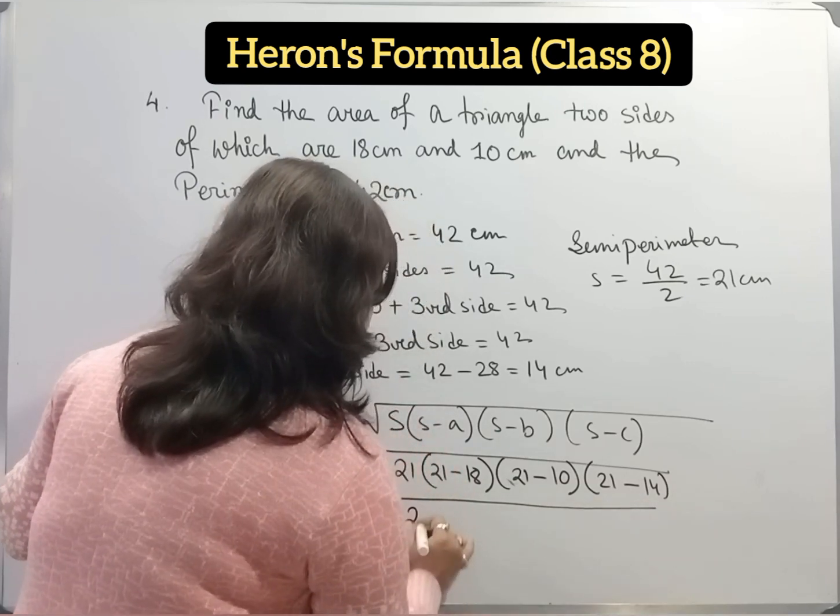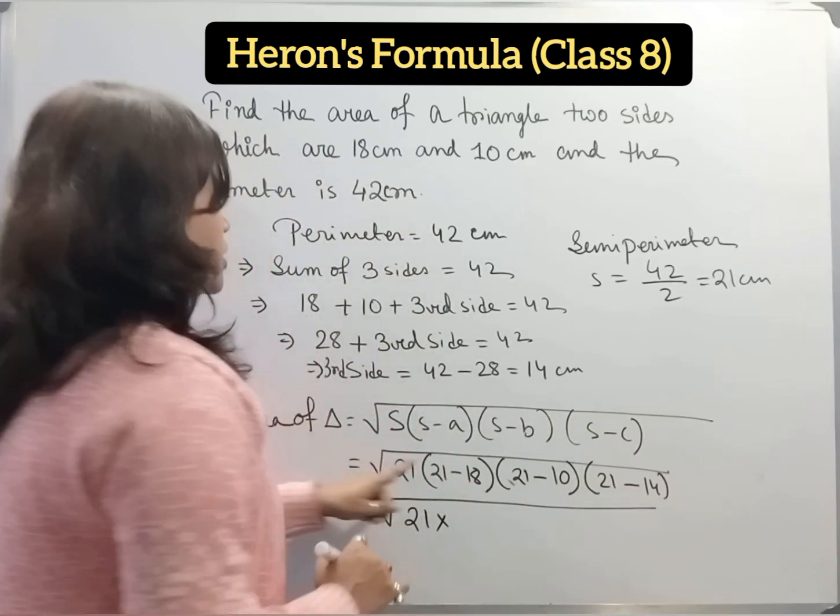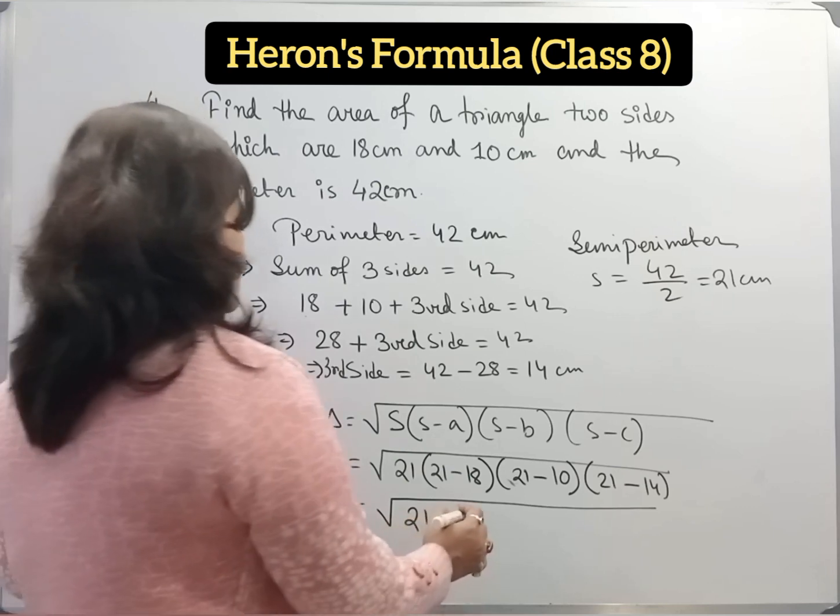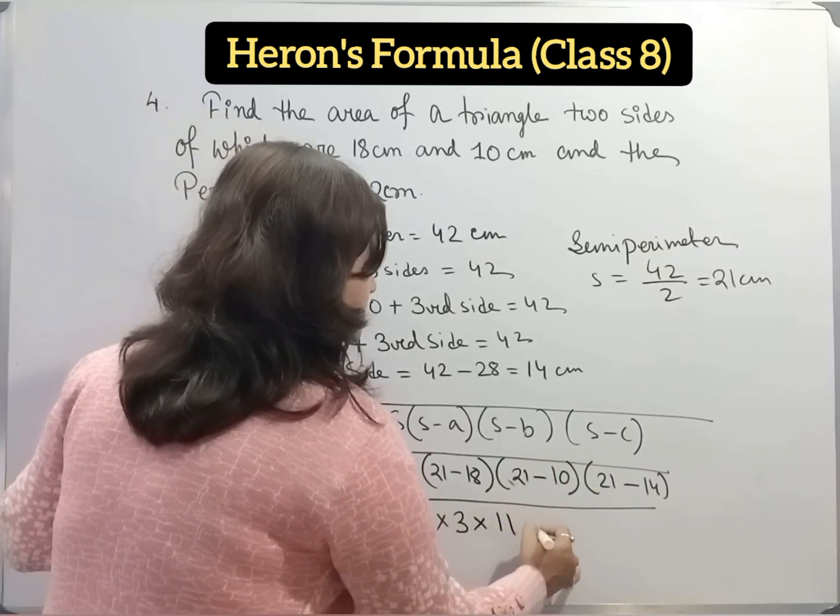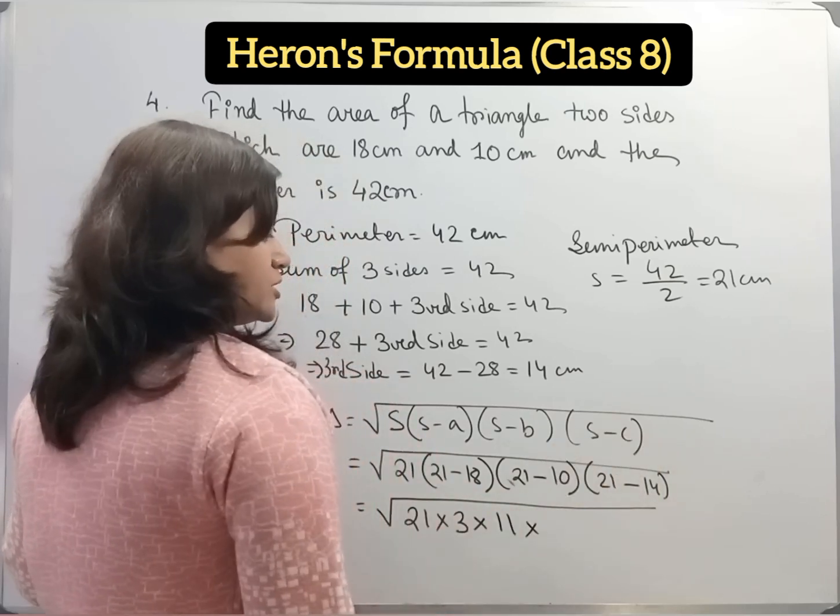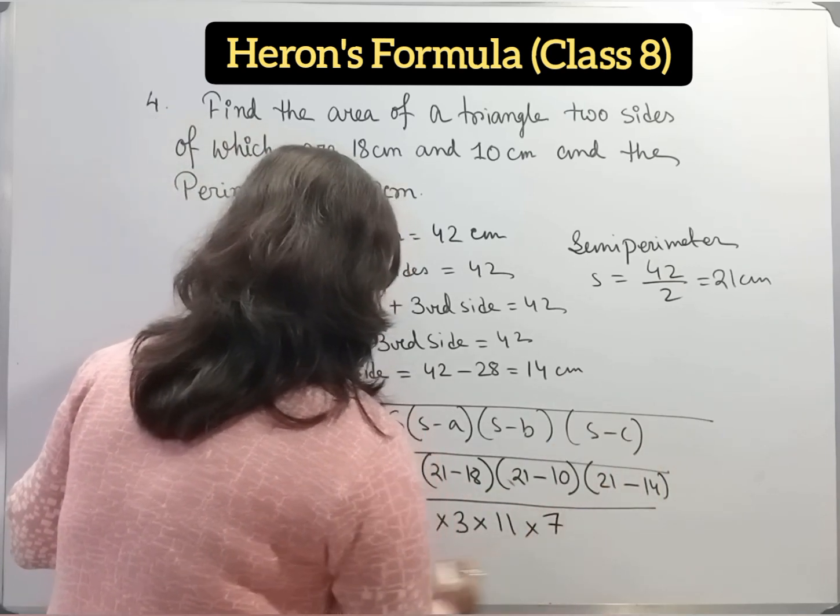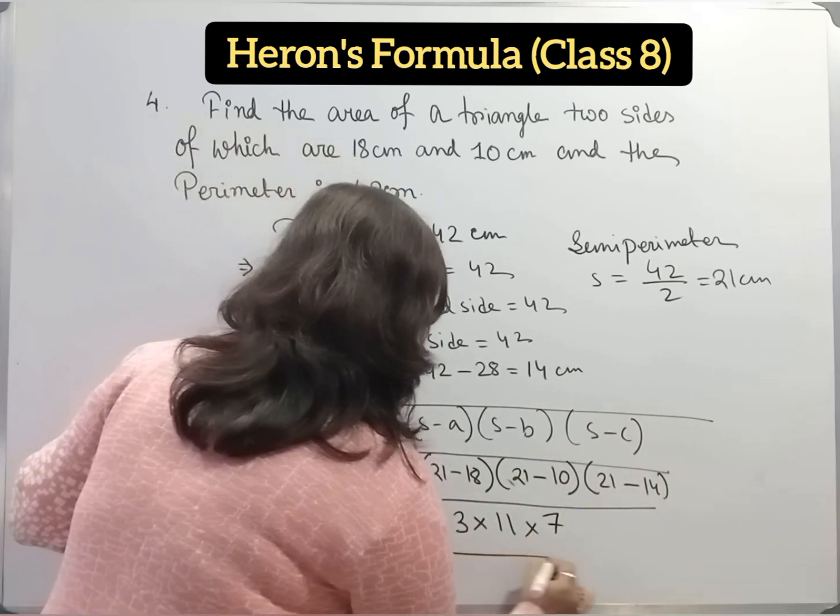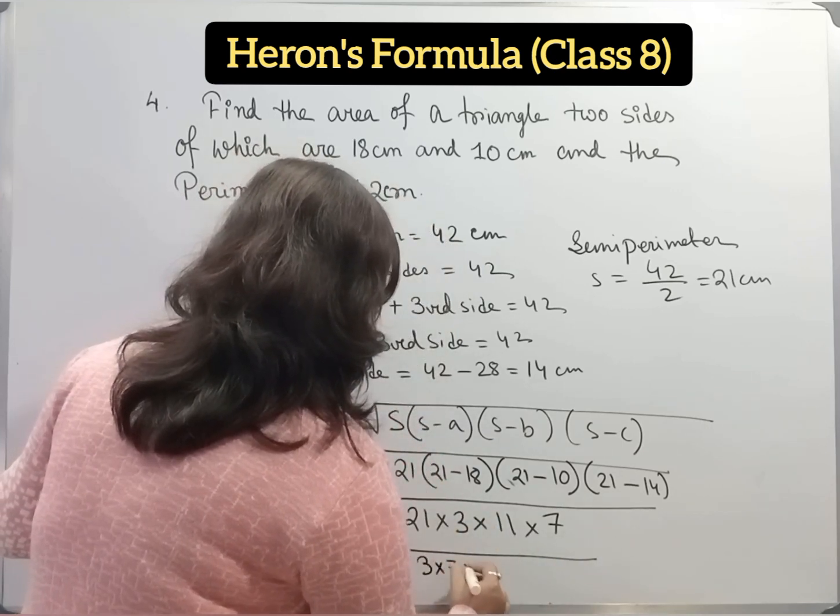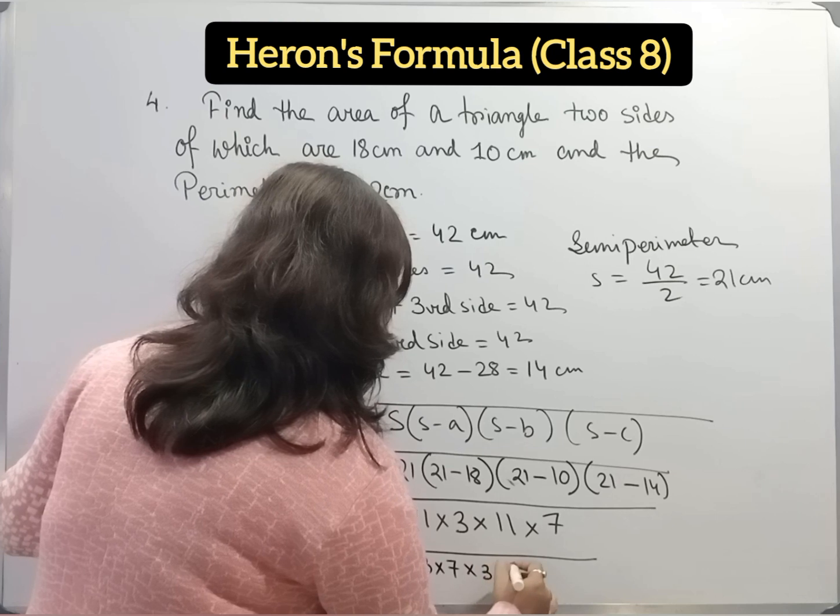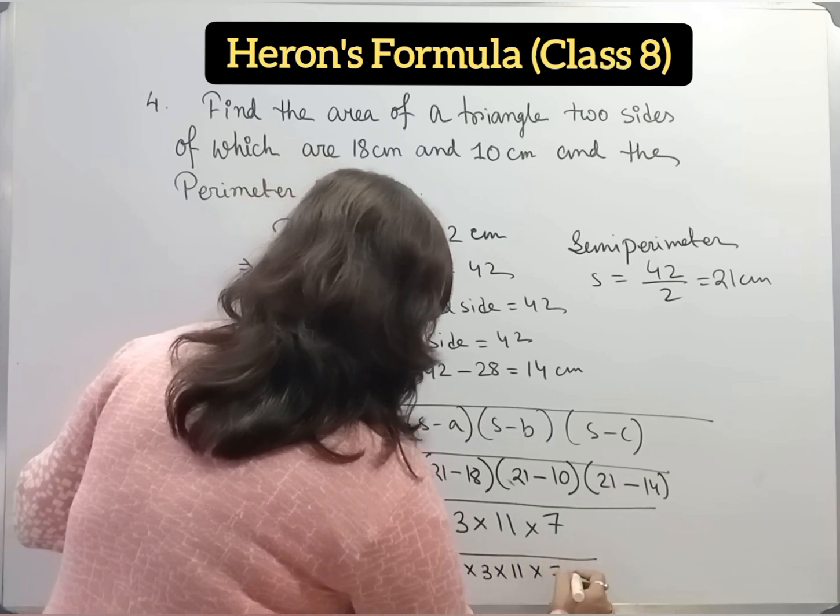So 21 into, 21 minus 18 we get 3, 21 minus 10 we get 11, 21 minus 14 we get 7. Now 21 we can write it as 3 into 7, into 3, into 11, into 7.